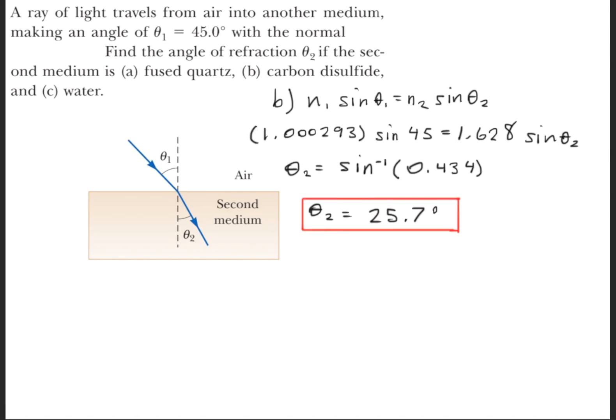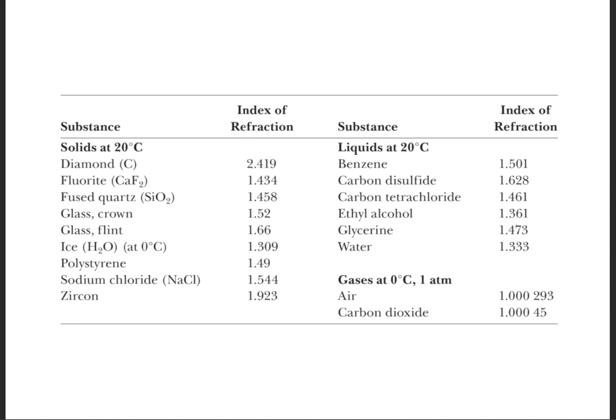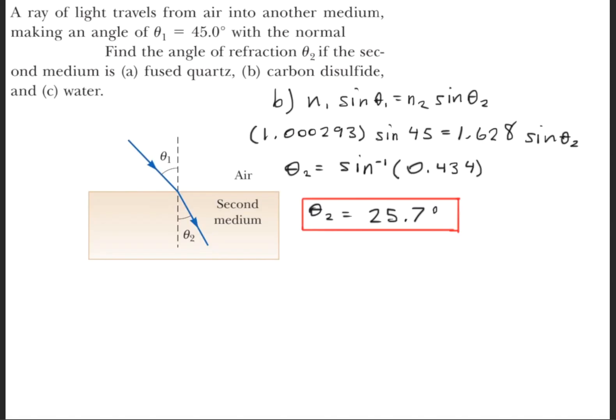Now we'll go ahead and repeat the same process for part B. This time, we'll need to get the index of refraction for carbon disulfide, which again you look up in a table. We'll plug in those values, use algebra to solve, and we get that theta 2 is equal to 25.7 degrees.